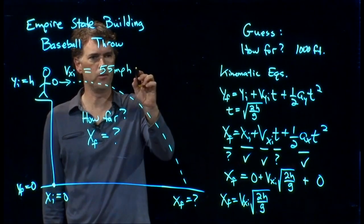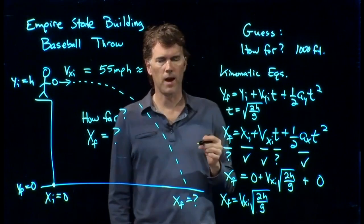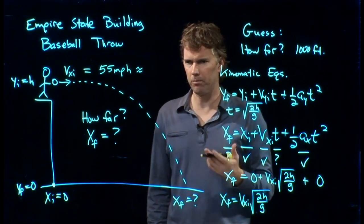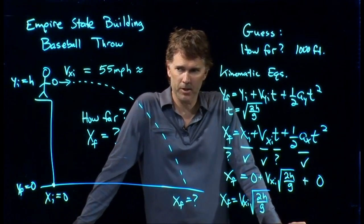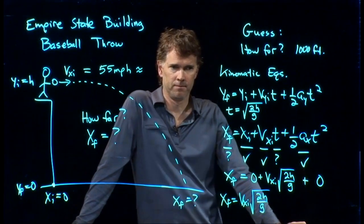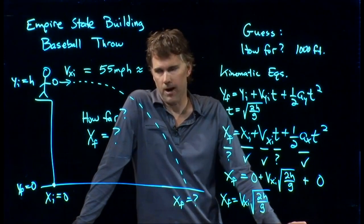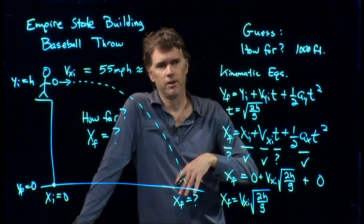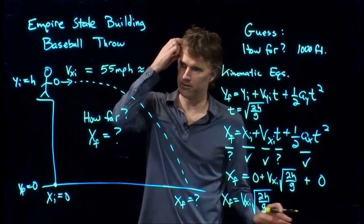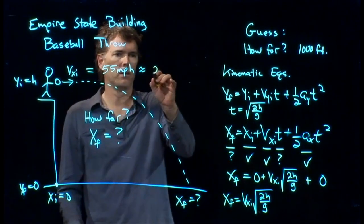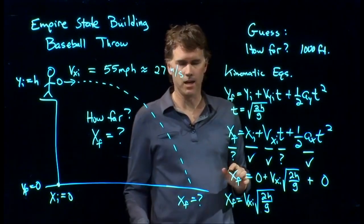55 miles per hour. We are, of course, going to work in SI units. So how fast is that in meters per second? Roughly. Anybody remember the conversion? One half? Yeah. It's one half, right? So 22. If you have miles per hour, cut it in half, and that's going to give you meters per second. So half of 55 is 27 and a half, but we'll just say that's 27. Okay? And let's use that as our number.